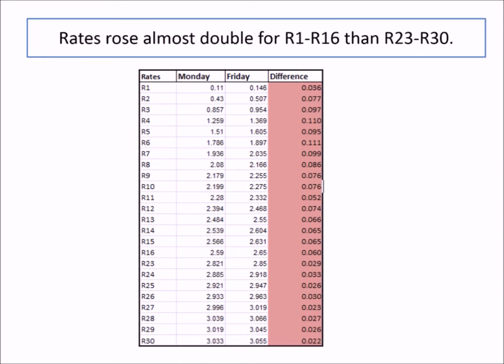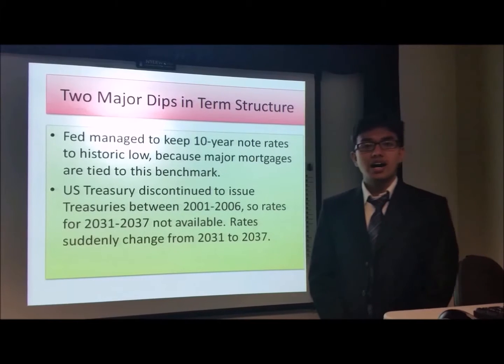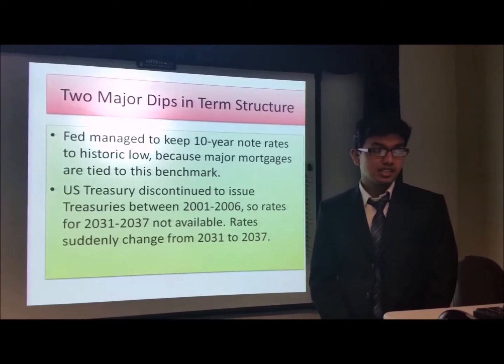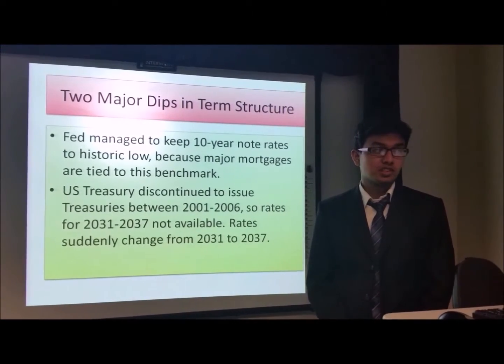Here is the table representing the difference in yields between Friday and Monday. As the table clearly displays, as the time to maturity increases, the rise in interest rates also thins out. Now I'll explain about the two major dips in the term structure.